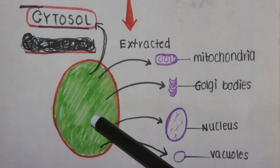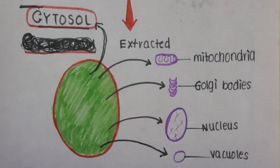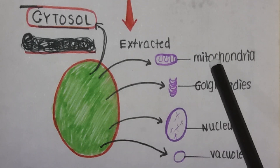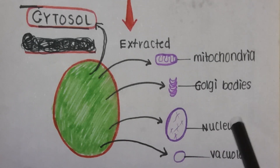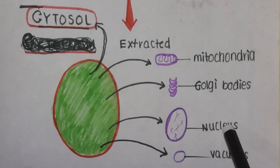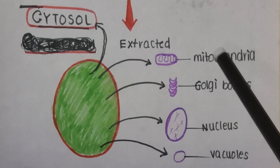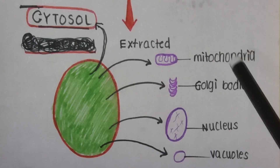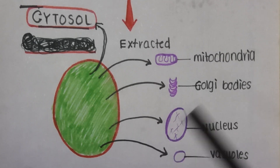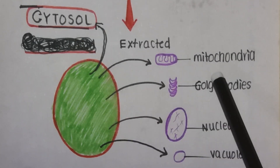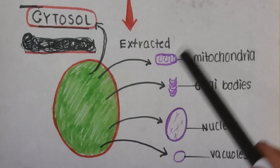I have brought the same simple animal cell here, but in this case I will subtract mitochondria, Golgi bodies, nucleus, vacuoles, and all other organelles from the cell. The part of the cell left after the subtraction of mitochondria, Golgi bodies, nucleus, vacuoles, and other organelles is known as cytoplasm.